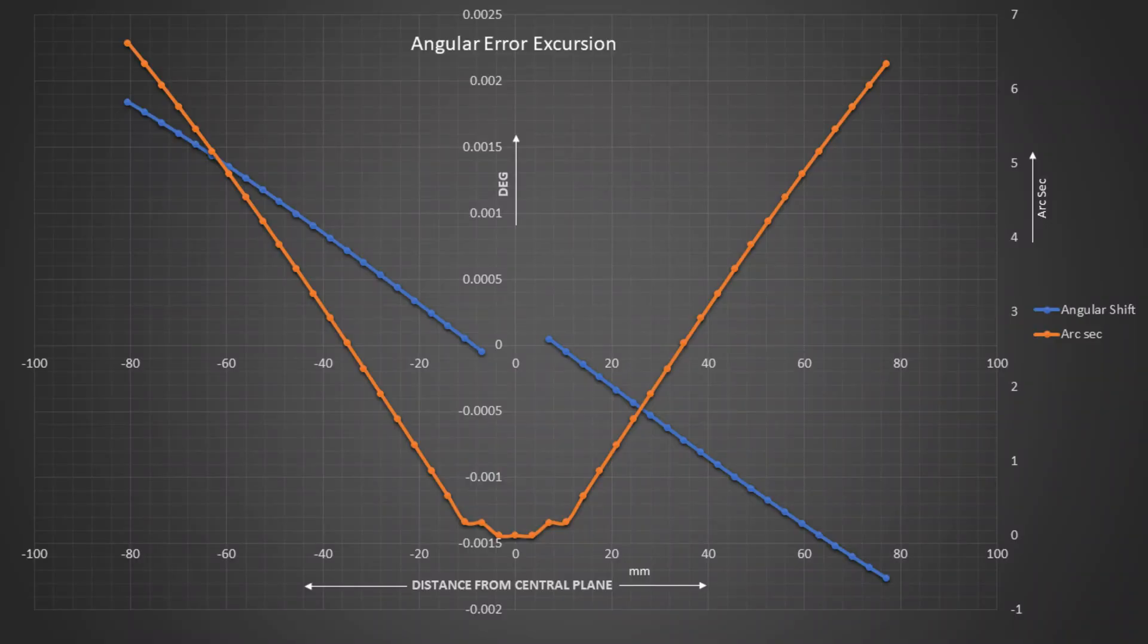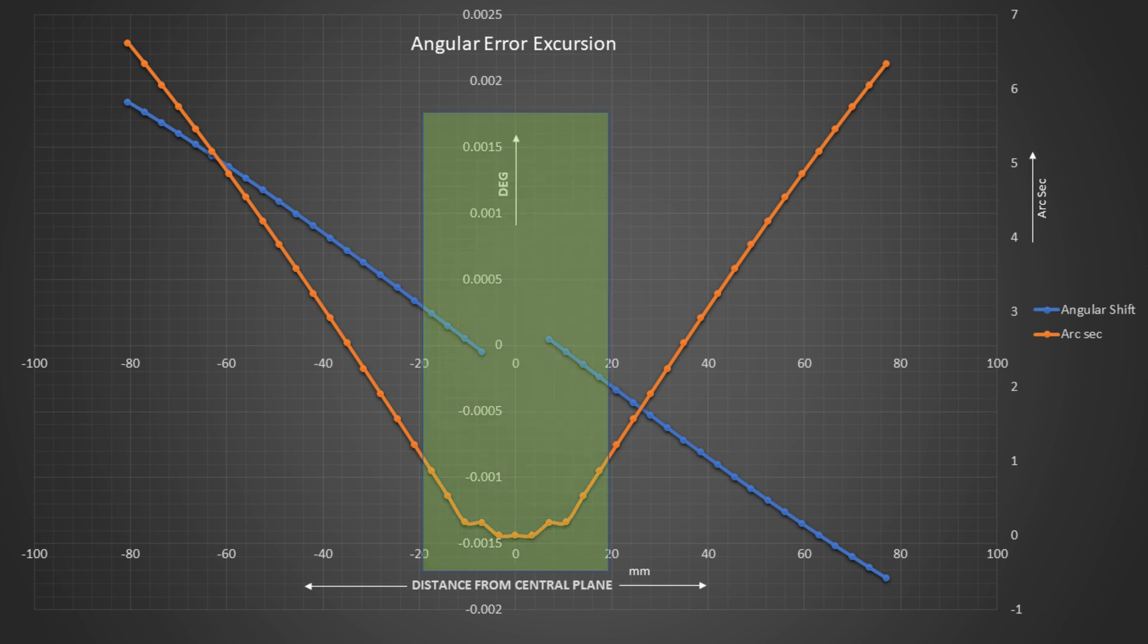Once I did the calculation, I got this error excursion for my tracking due to the screw drive mechanism. Note this is not a problem for visual at all. However, if I want to do a 10 or 20 second long exposure for astrophotography, it is not possible in the red zone which is marked here.